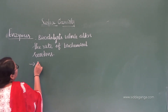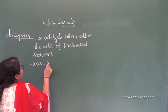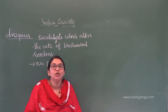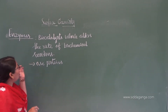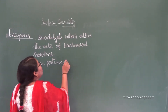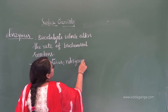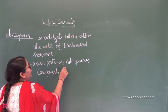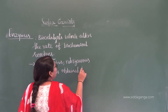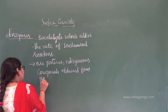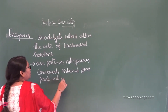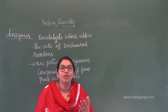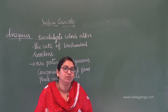Enzymes are nothing but proteins. All enzymes are proteins, but not all proteins are enzymes. That means they are nitrogenous compounds obtained from plants and animals. As they are proteins, they are made up of amino acids which have functional groups such as OH, SH, NH₂, and COOH. These functional groups are responsible for their catalytic activity.